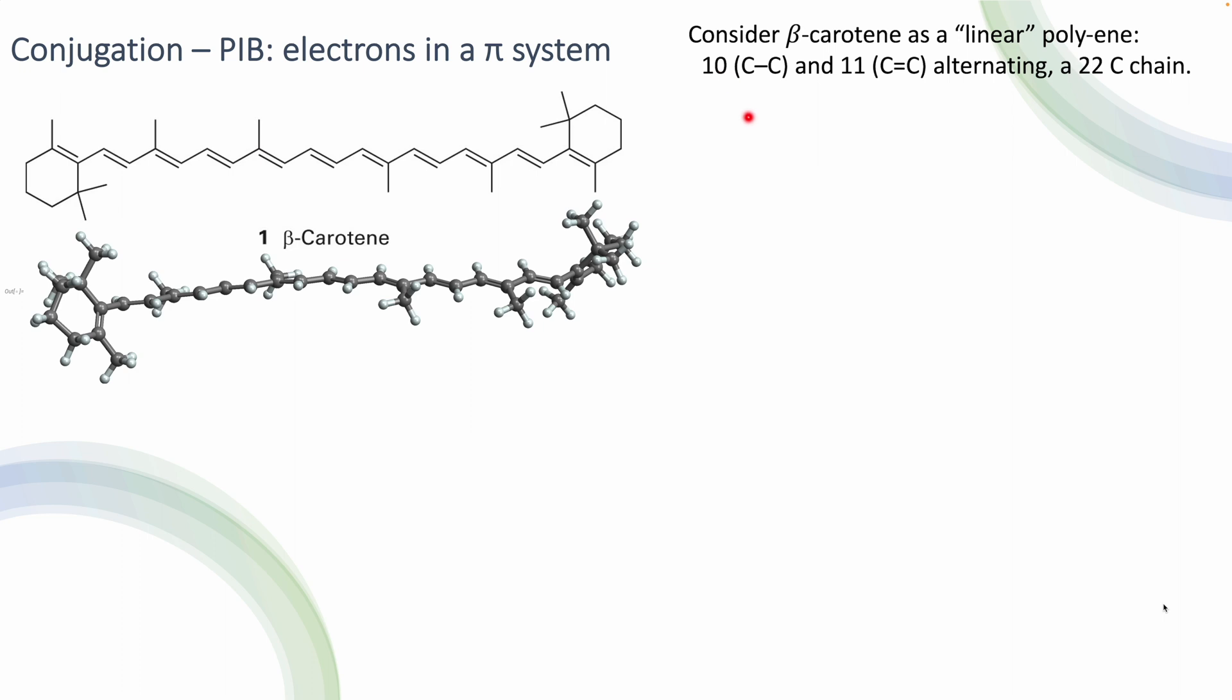Now remember, we have 10 carbon single bonds, 11 carbon double bond carbons that are alternating. We have a total of 22 carbons in that chain that corresponds to my box for this particle in a box model. So we can count the number of carbon-carbon bonds that I'm going to take into account in order to calculate the length of that box.